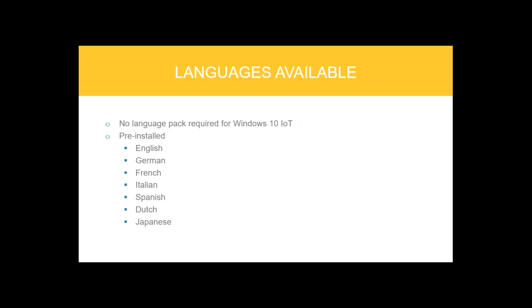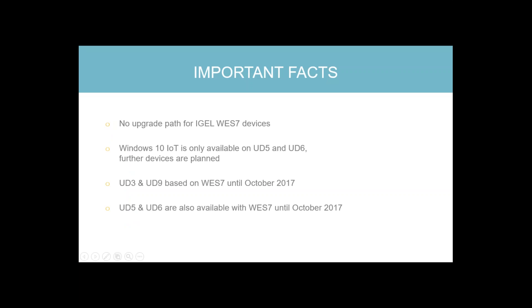In the past, partial updates were needed for language packs, but that is no longer necessary because languages are pre-installed in the Windows 10 version. Some important facts: there will be no upgrade paths for older VES7 devices. Windows 10 Internet of Things is currently only available with our UD5 and UD6 devices, with further devices planned. The UD3 and UD9 based on Windows 7 are available until October 2017, and for the UD5 and UD6 you can choose between Windows 7 or Windows 10 until October 2017.